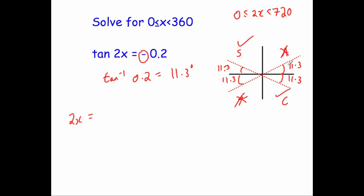Going around once, our first solution will be here: 180 minus 11.3, which equals 168.7 degrees. Our next solution, going around to here, is 360 minus 11.3, which equals 348.7 degrees.